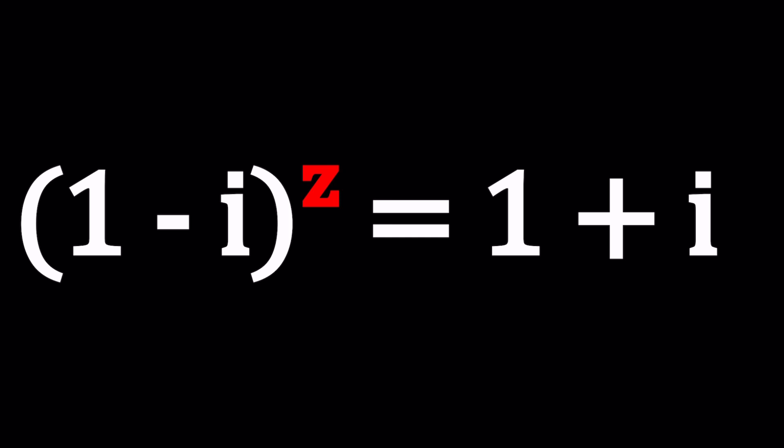We have 1 minus i to the power z equals 1 plus i. So we have an exponent that conjugates basically because the complex conjugate of 1 minus i is 1 plus i. By the way, if you're new to complex numbers, go ahead and check out my lecture videos. I made a bunch of videos on basics of complex numbers.